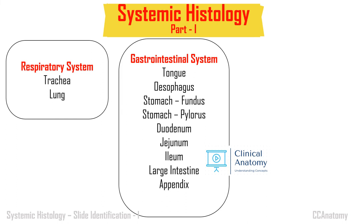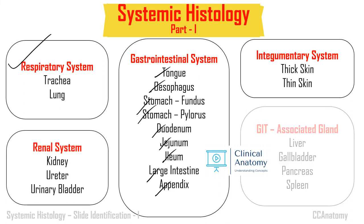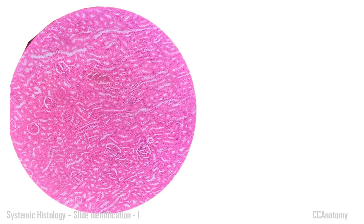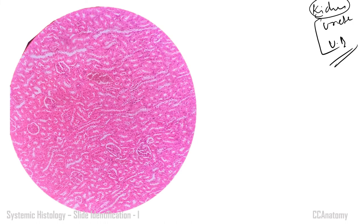We have now completed the respiratory system, GI tract (tongue, esophagus, stomach fundus and pylorus, duodenum, ileum, jejunum, colon/large intestine, appendix), liver, gallbladder, and pancreas — with spleen and the lymphatic system covered in the previous video. Now we are moving to the renal and integumentary systems. In the renal system there are three slides: kidney, ureter, and urinary bladder. Ureter and urinary bladder have transitional epithelium. The kidney is easily identified by locating the glomeruli.